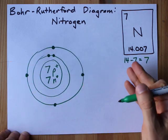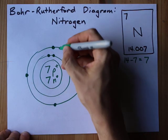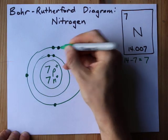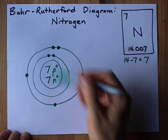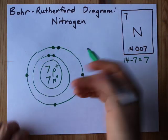If that second shell can hold eight it means I have four pairs. One, two, three, four singles and then I add my fifth to double up the first electron there. One, two, three, four, five, six, seven. Seven electrons.